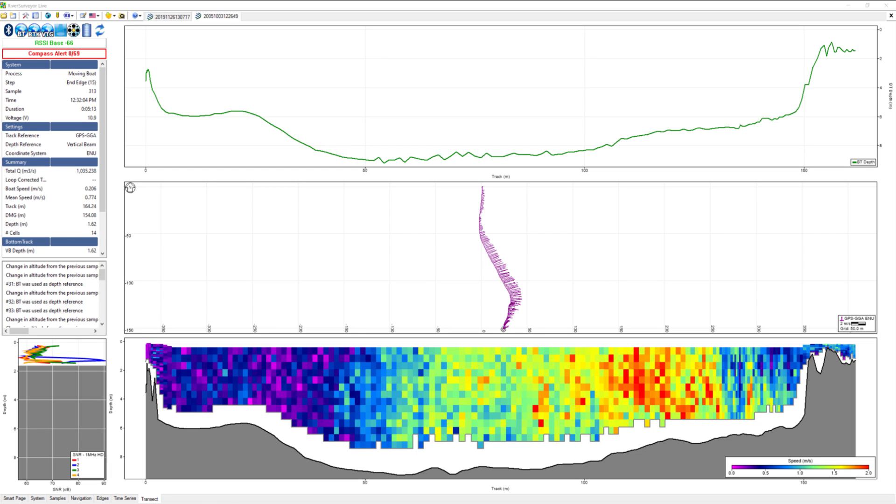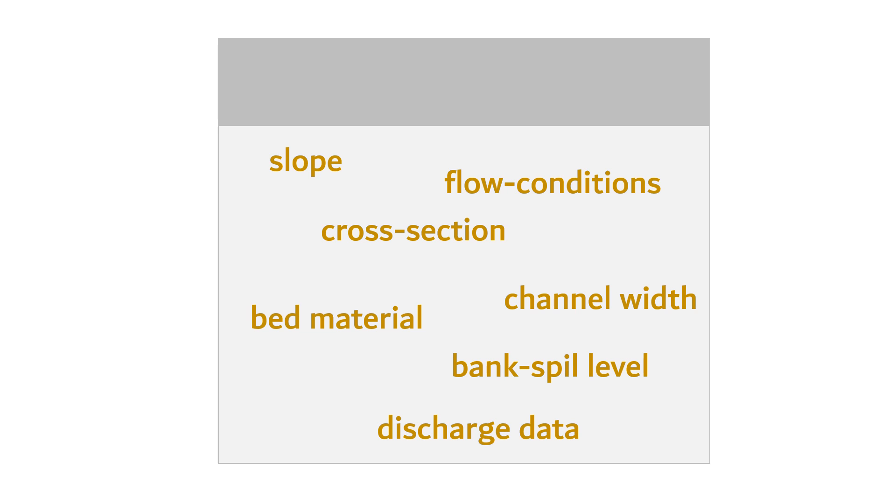We know the flow conditions and the cross-sectional profile. We know when the river spills into the floodplain. Combining this information with the available discharge data leads to a much more accurate and defensible rating curve.